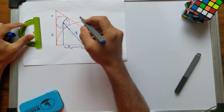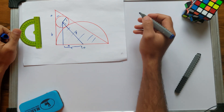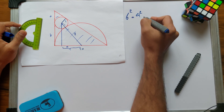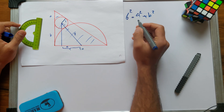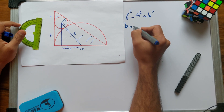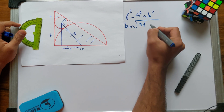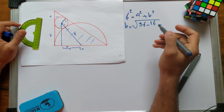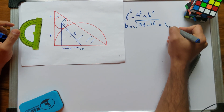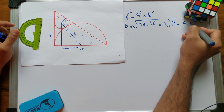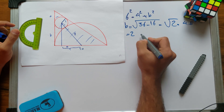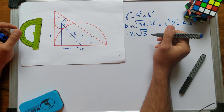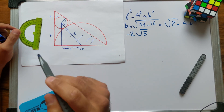Using the Pythagorean theorem on this new triangle: 6 squared equals 4 squared plus B squared. So B equals the square root of 36 minus 16, which is the square root of 20. Since 20 equals 4 times 5, we can write B equals 2 square root of 5. So we found B just based on the Pythagorean theorem.